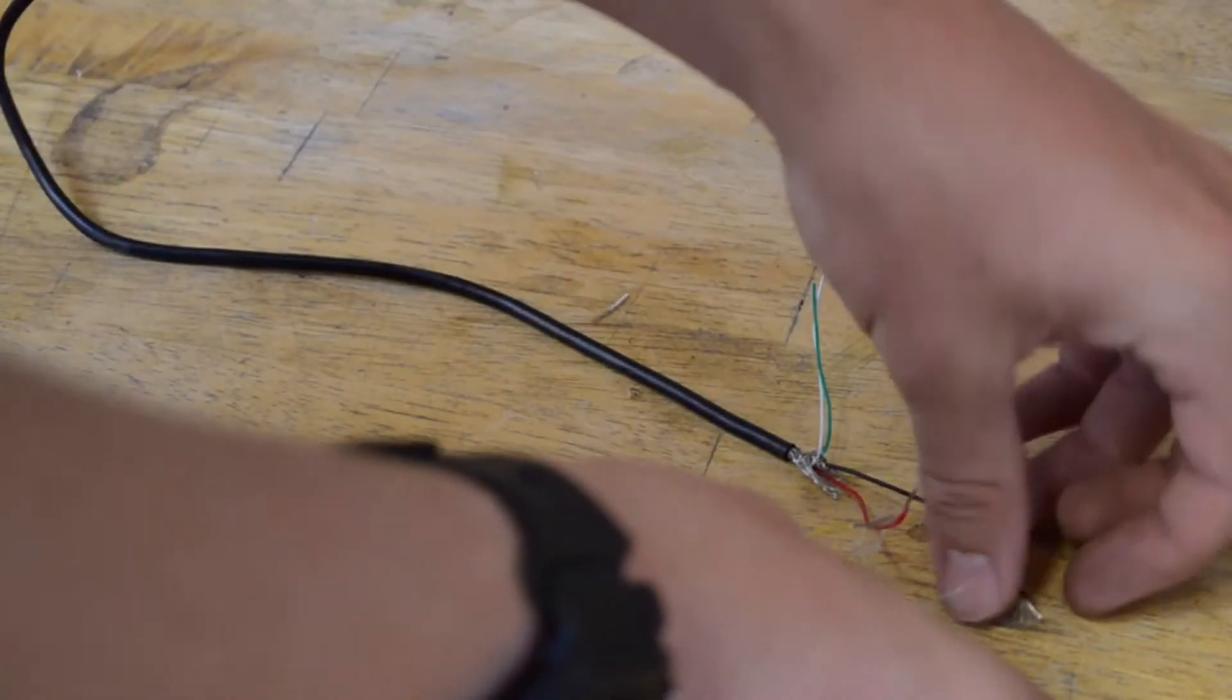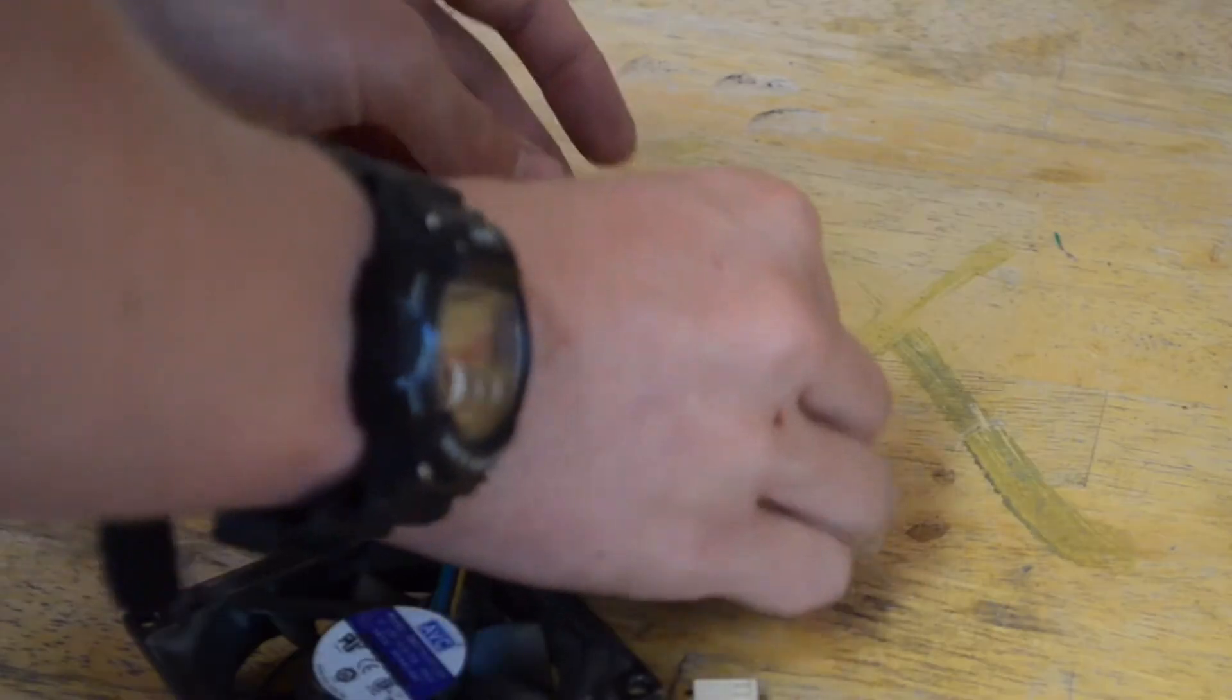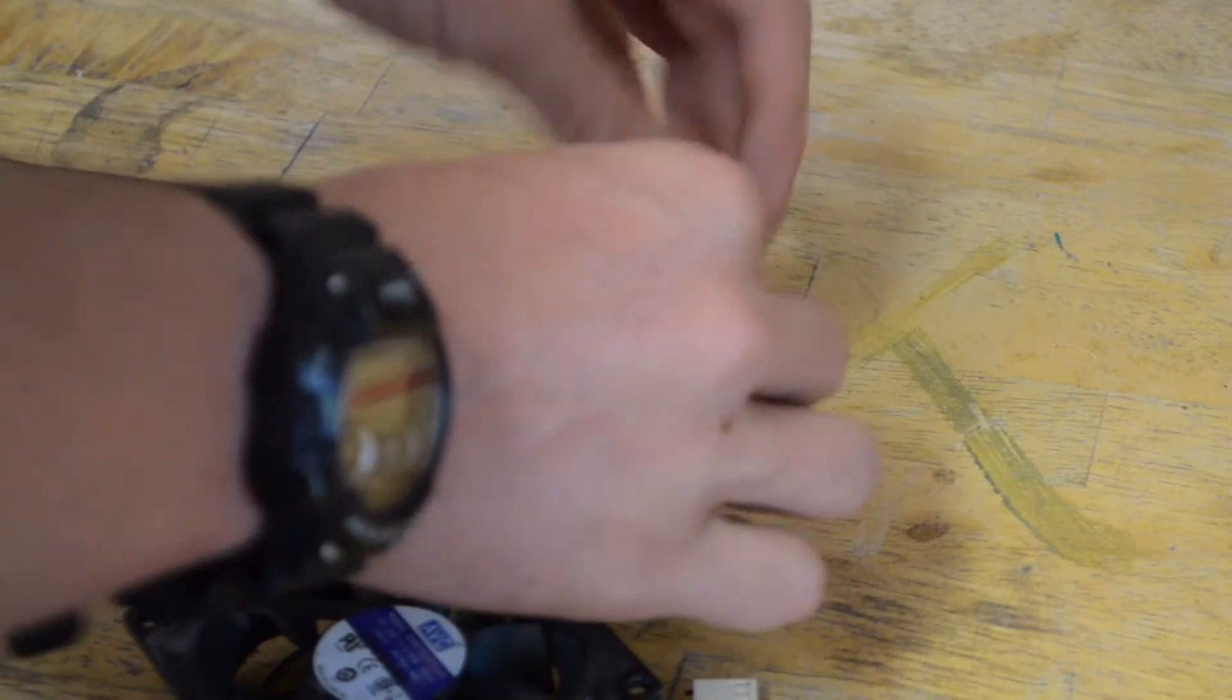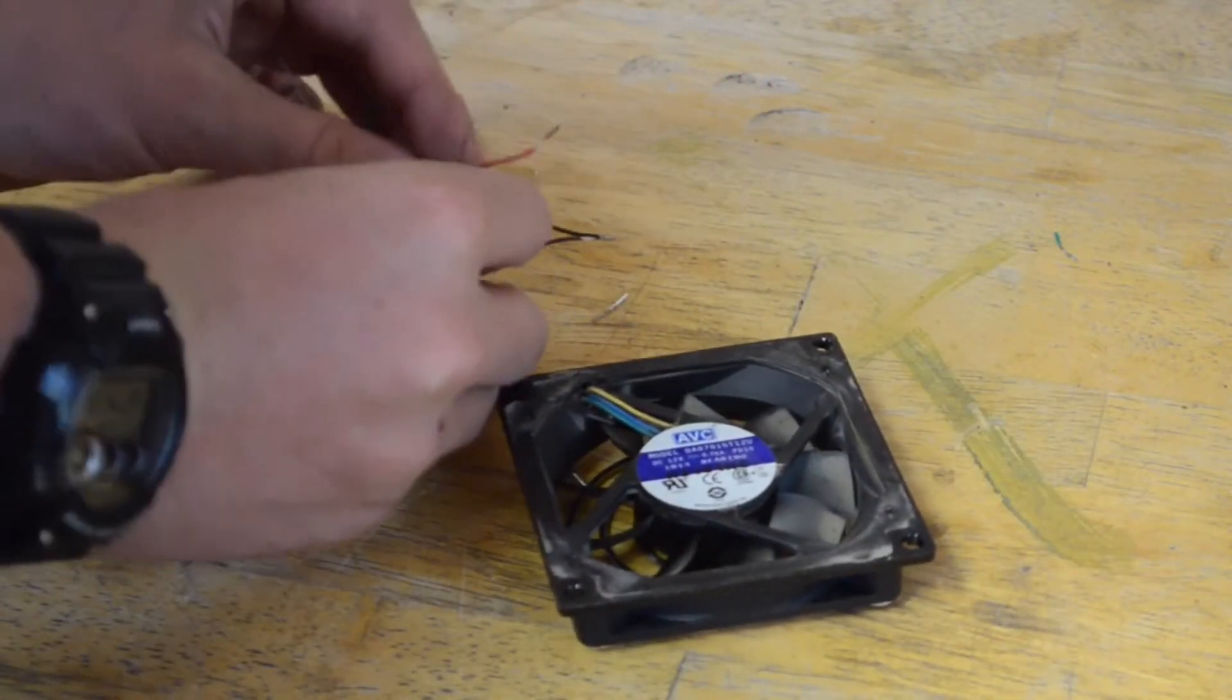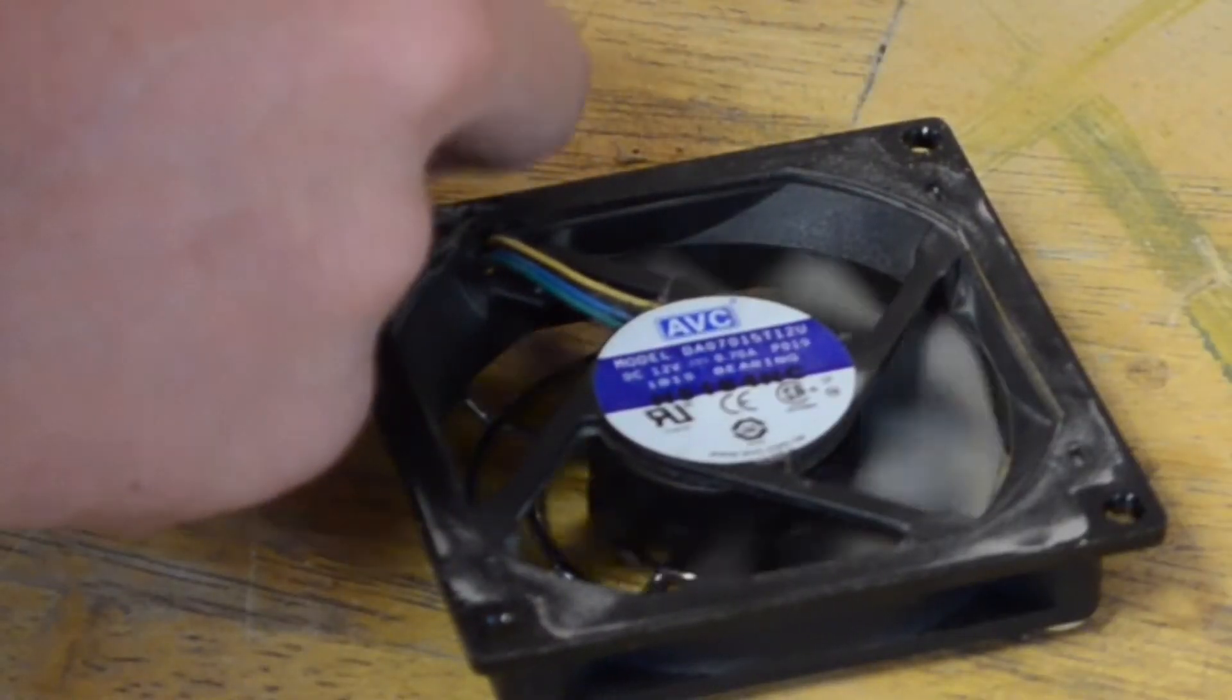Let's connect black to black, then connect the yellow to red. We'll give it a short tap to see if it gives us any feedback. Tapping them together, as you can see, the fan is spinning a bit.